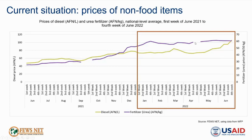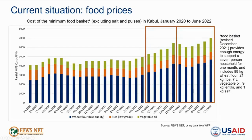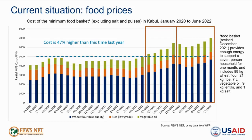This chart shows prices of wheat flour, rice, and vegetable oil — three key staple food commodities making up the majority of the minimum food basket in Afghanistan — in Kabul from January 2020 to June 2022. Prices increased in the latter half of 2021 following the Taliban takeover, then declined slightly in early 2022 alongside currency recovery, but have continued to increase since then, driven by rising fuel prices and rising global commodity prices. As of June 2022, the cost of this partial minimum food basket in Kabul was 47% higher than the same time last year.